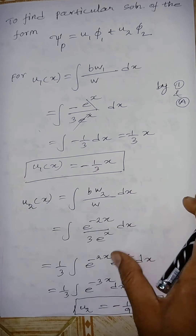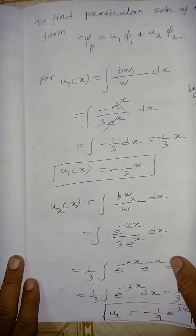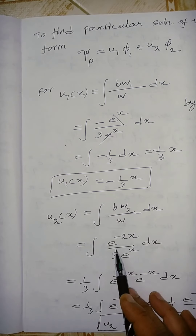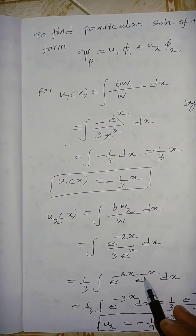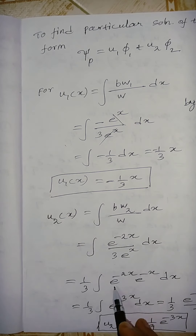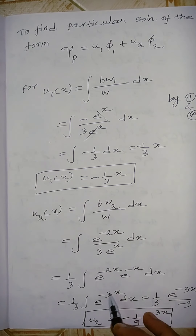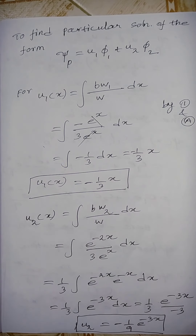To find u₂(x), integrate bW₂/W with respect to x: ∫e^(−2x)/(3e^x) dx = (1/3)∫e^(−3x) dx = (1/3)·e^(−3x)/(−3) = −e^(−3x)/9. So u₂ = −e^(−3x)/9.